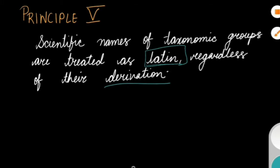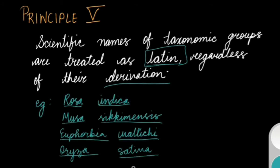Here are a few examples. Rosa indica: although Rosa is a Latin word itself, indica is a noun, India. It means that it's from India. So the noun India has been converted to indica, which is grammatically Latinized. Similarly, Musa is a Latin word and sikkimensis. Sikkim is a noun, a name of a place, but it has been Latinized by adding ensis in the end.